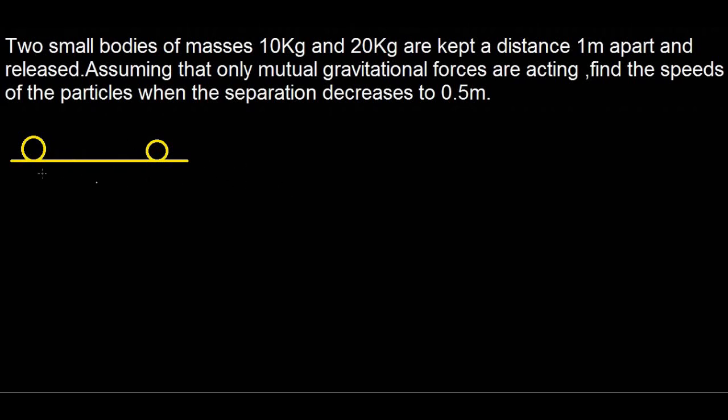So here we have the two masses. At the initial conditions the separation is one meter, this mass is 10 kg and this one is 20 kg. After certain time due to the mutual gravitation force the separation decreases as these particles begin to move closer. When the separation reaches 0.5 meters, a velocity V1 is achieved by this one and V2 by this one.